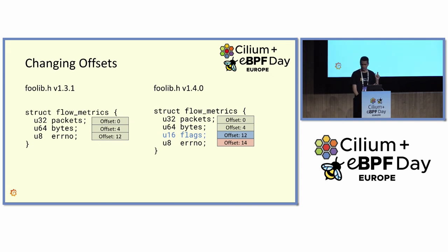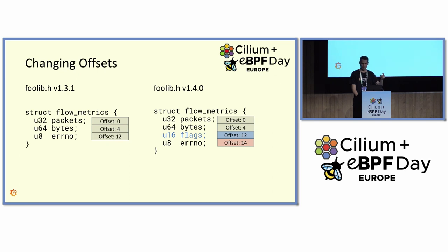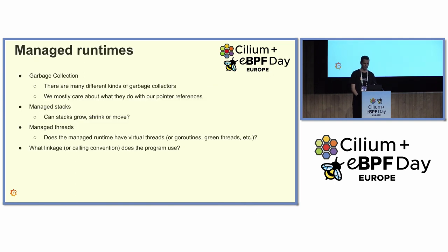We can use debug information — if you have debug info in your executable, you can get those offsets at runtime. But many people strip debug information to reduce binary size. In that case, we need to maintain a local database with all the struct fields we access for all different versions of the libraries. This relative fragility gets increased when we go to managed runtimes like Go and Java.